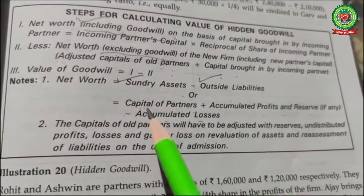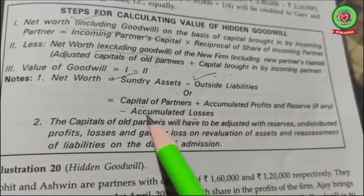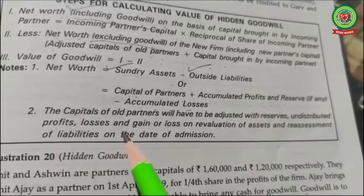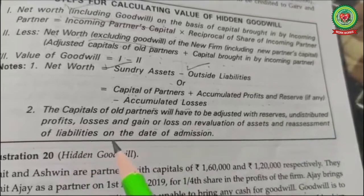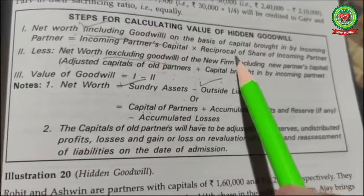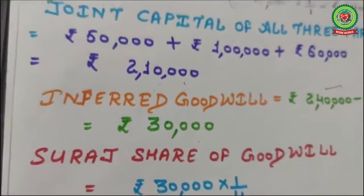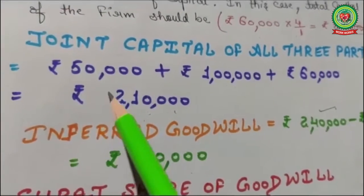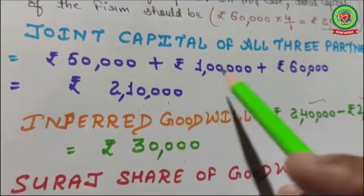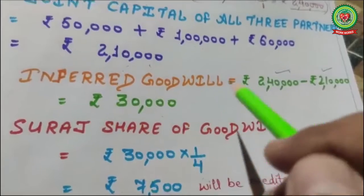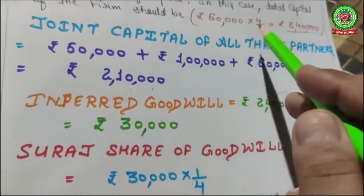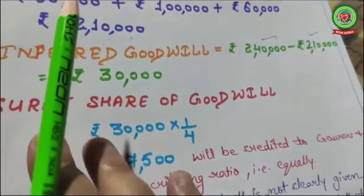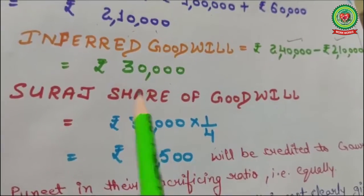You can also use: sundry assets minus outstanding liabilities, or capital of partners plus accumulated profits minus accumulated losses. The capital of old partners must be adjusted with reserves, undistributed profits or losses, and gains or losses on revaluation of assets on the date of admission. The value of goodwill equals net worth including goodwill minus net worth excluding goodwill. In our example, two lakh forty thousand minus two lakh ten thousand gives thirty thousand. Then find the new partner's share of goodwill.